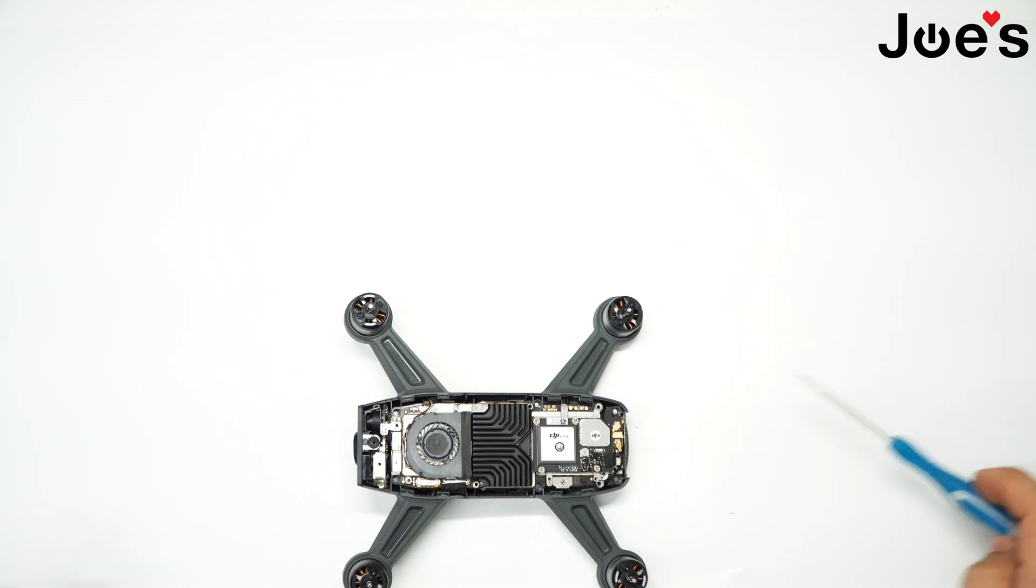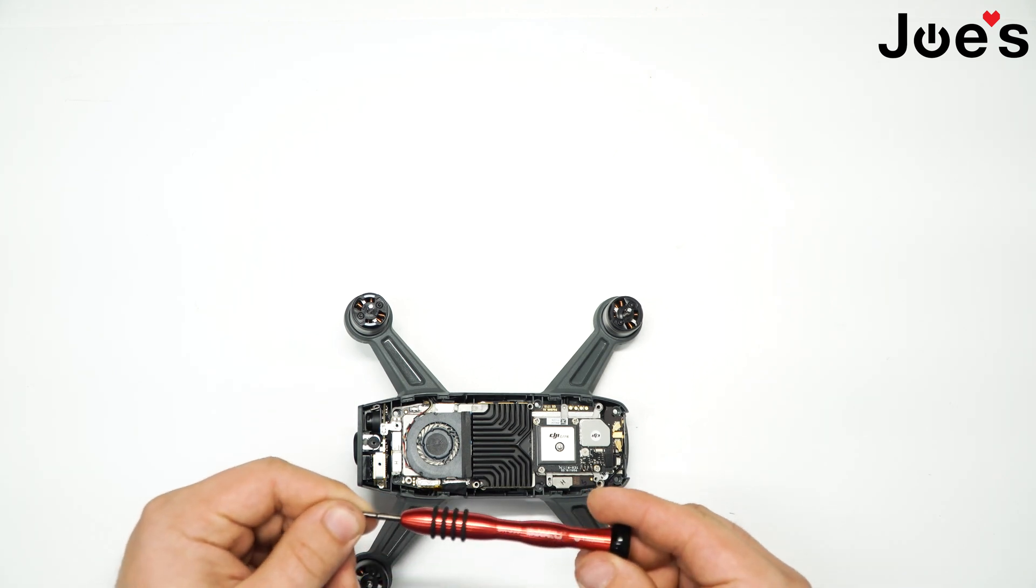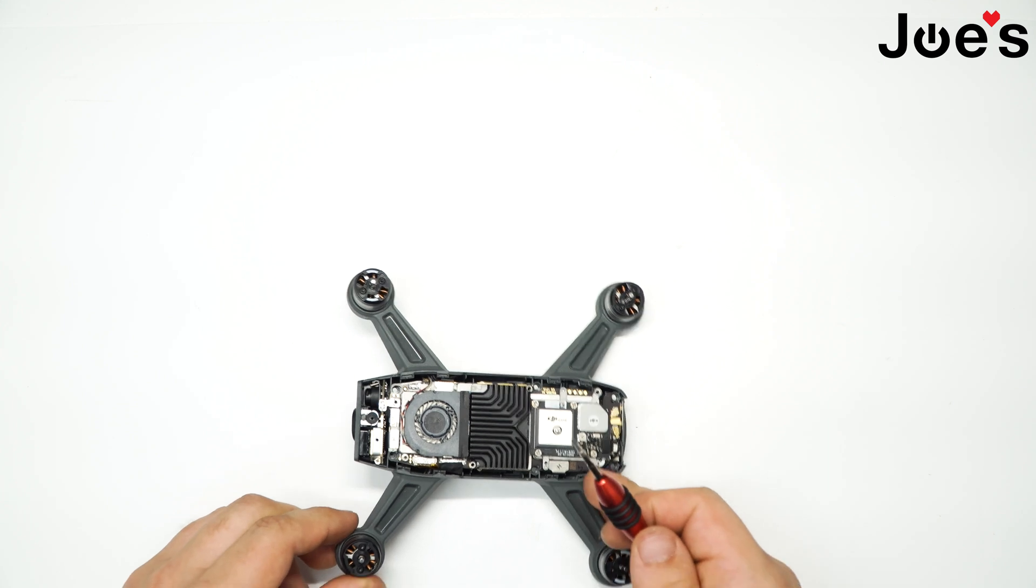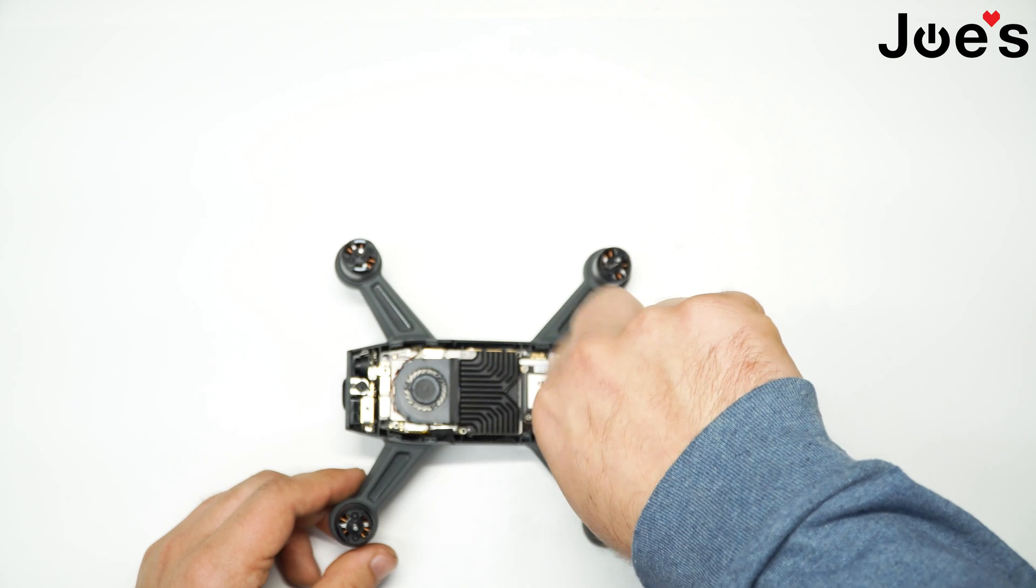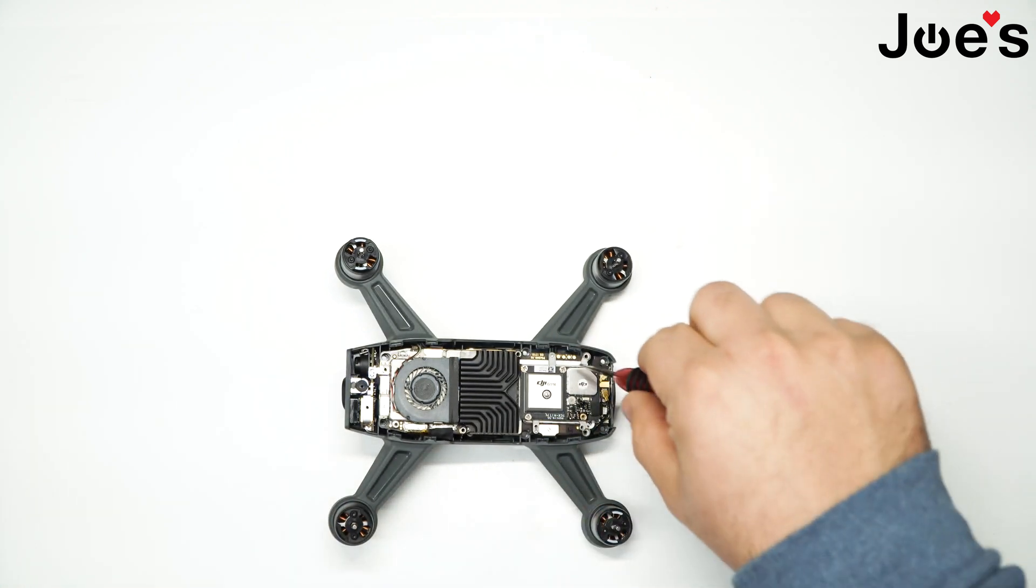Now this is your GPS module here. It is held in with four phillips screws. I'll be using my 1.5mm, but a 2mm will also work, so either one you have laying around will get the job done. Just take these four screws out.